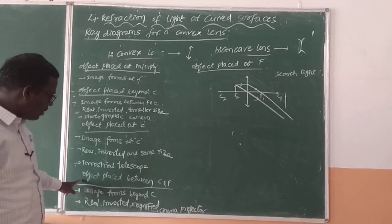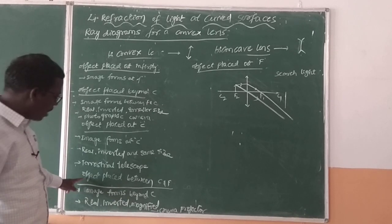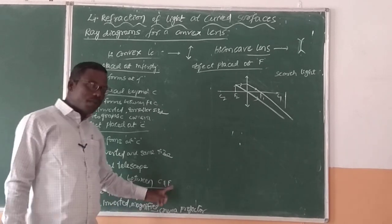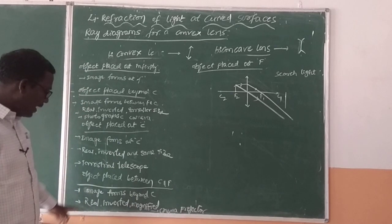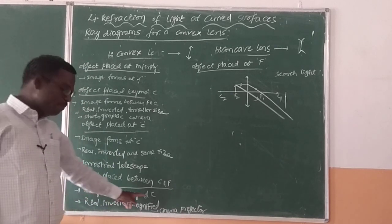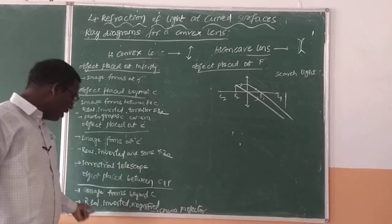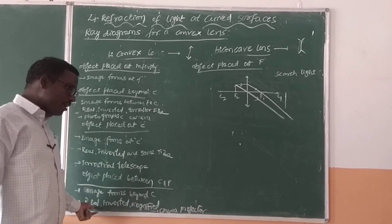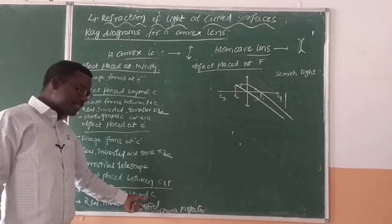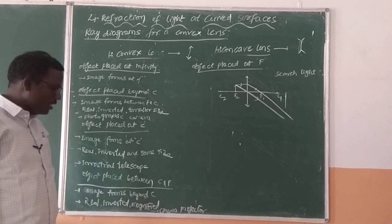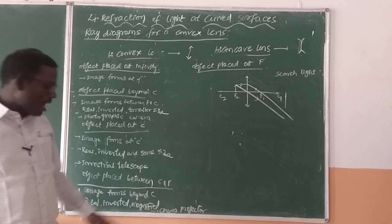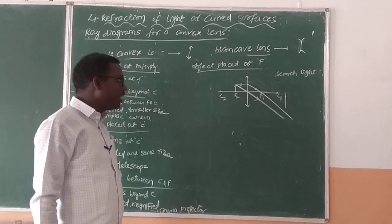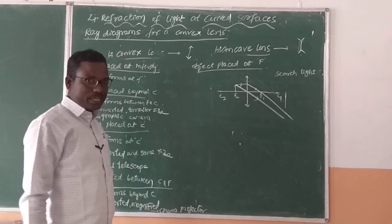When an object is placed between F and 2F, the image is formed beyond 2F. The nature of the image is real, inverted, and magnified. This type of image is formed in a cinema projector.